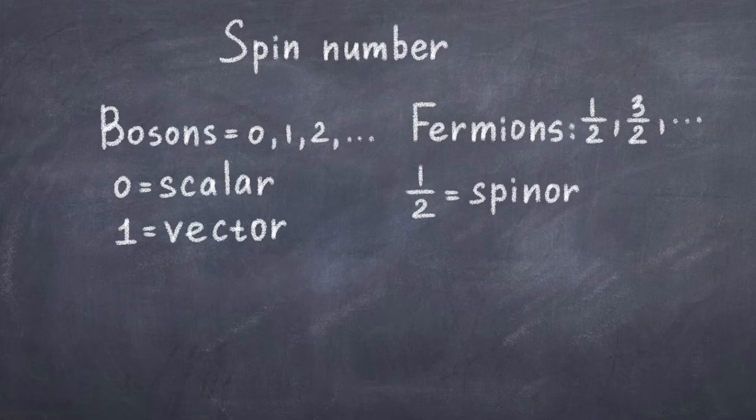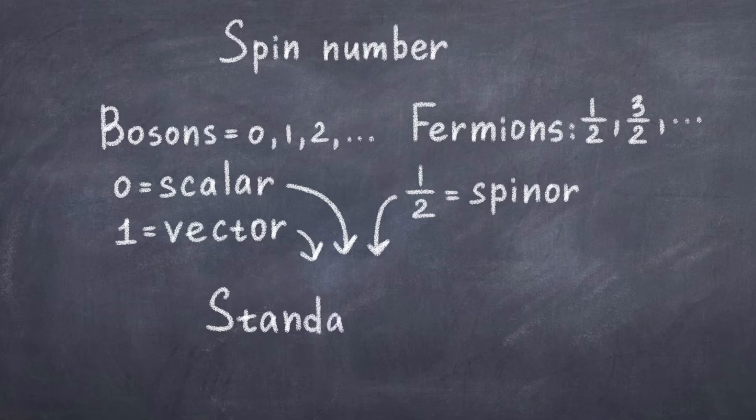The spin number is related to the math describing the particle. Spin zero particles are scalar bosons. Spin half particles are fermions, more specifically spinors. And spin one particles are vector bosons.